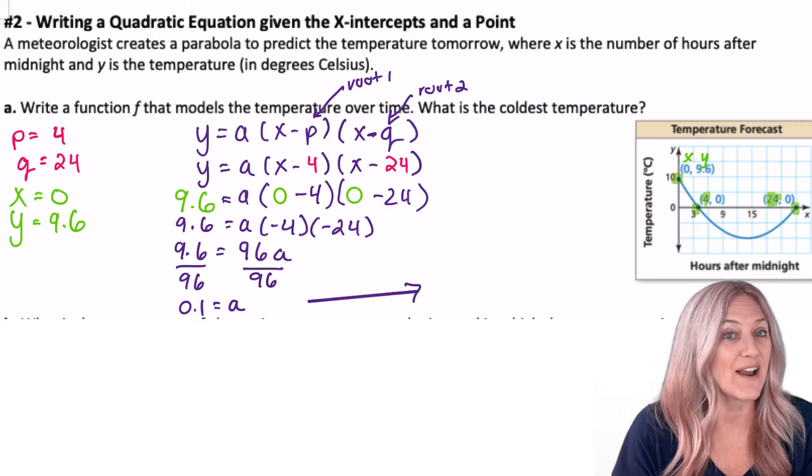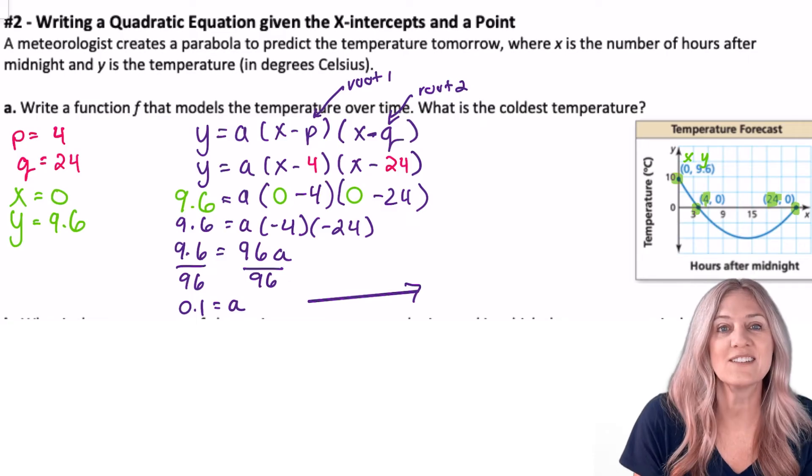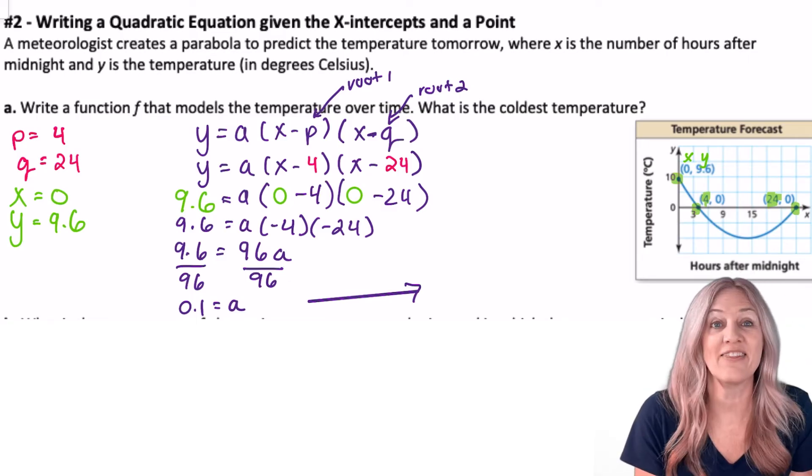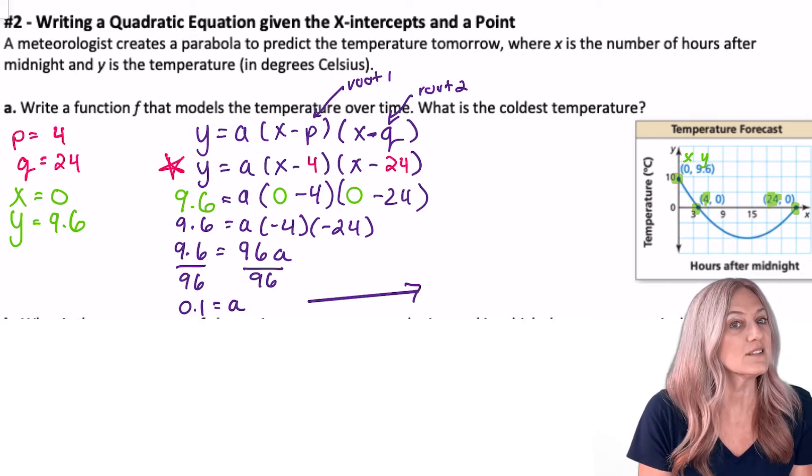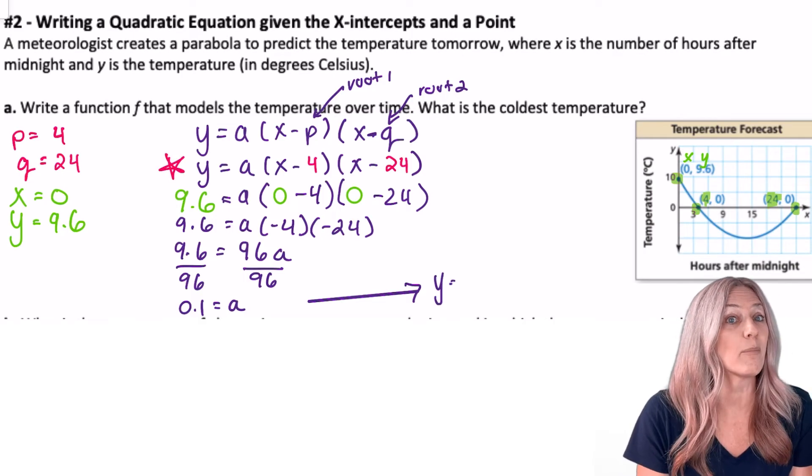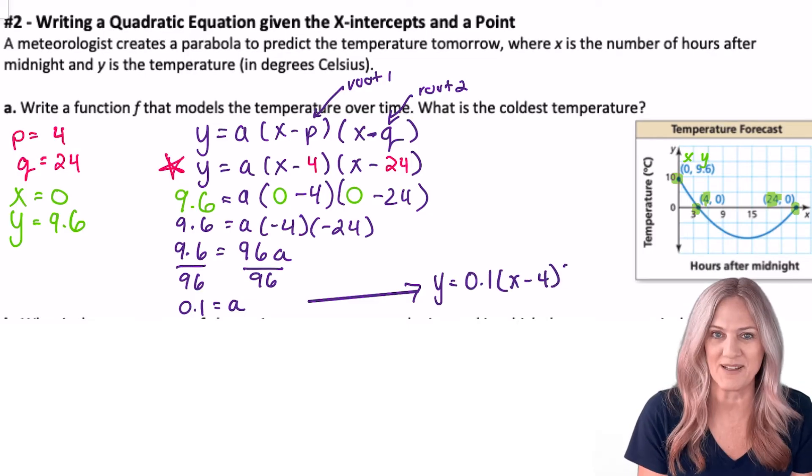All right, we have the value for a. Are we done? No, we have to write the quadratic function that exists for all of the points on this parabola. This time we're using intercept form. So Y equals 0.1(x - 4)(x - 24).